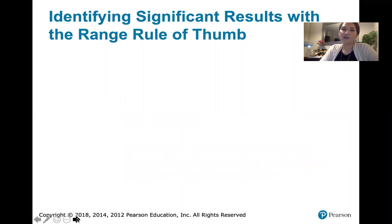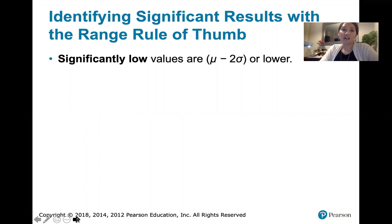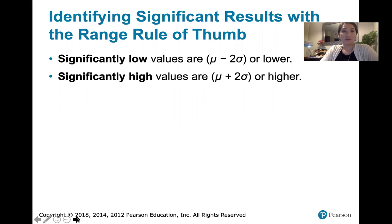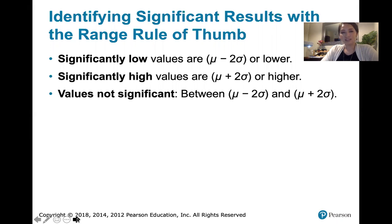With the range rule of thumb, values that are more than two standard deviations from the mean are significantly high or significantly low. Specifically, significantly low values are the mean minus two standard deviations or lower, and significantly high values are the mean plus two standard deviations or higher. Since we can calculate the mean and standard deviation using a probability distribution, we can use those parameters to determine whether a particular value is significantly high or significantly low. Values within two standard deviations of the mean are not significant in a statistical sense.